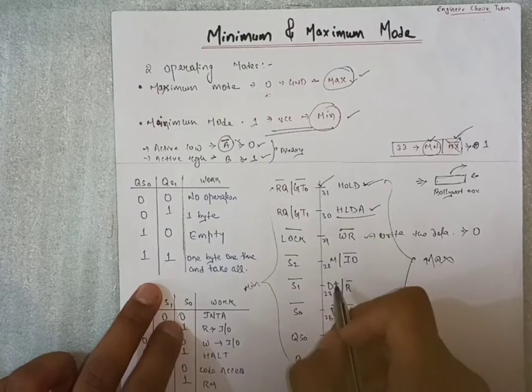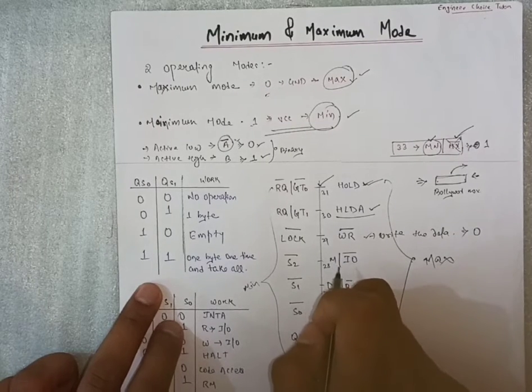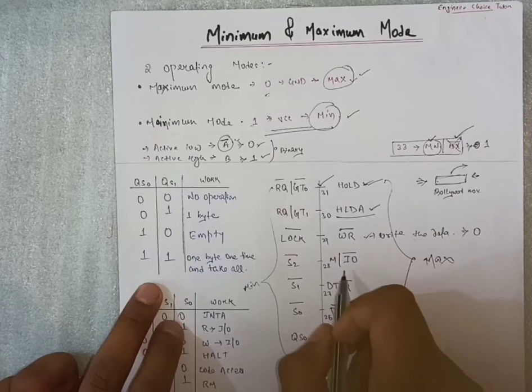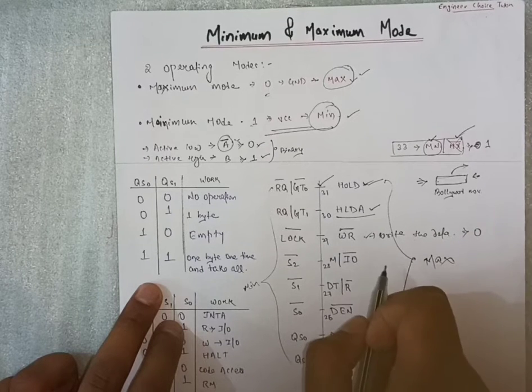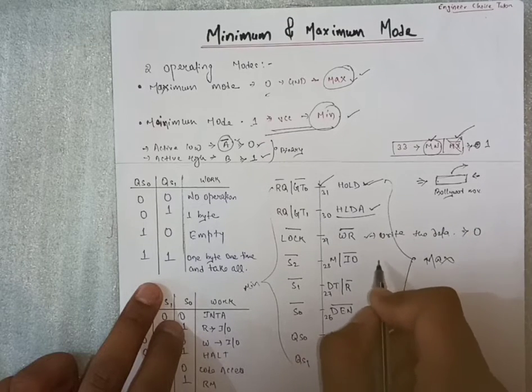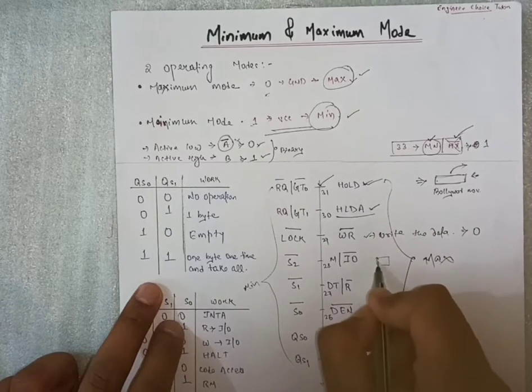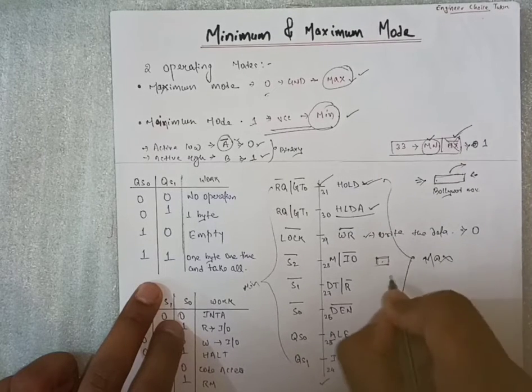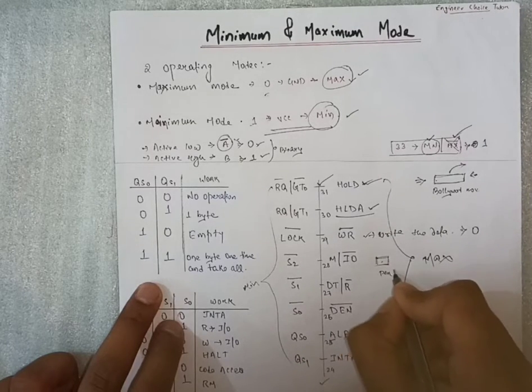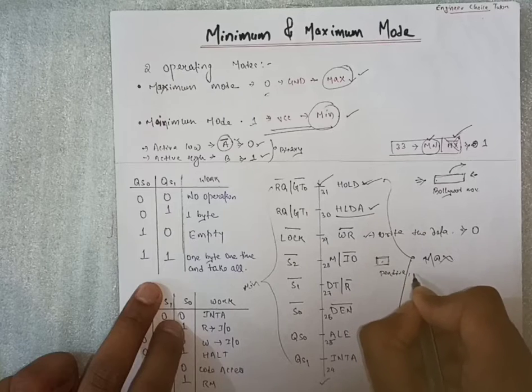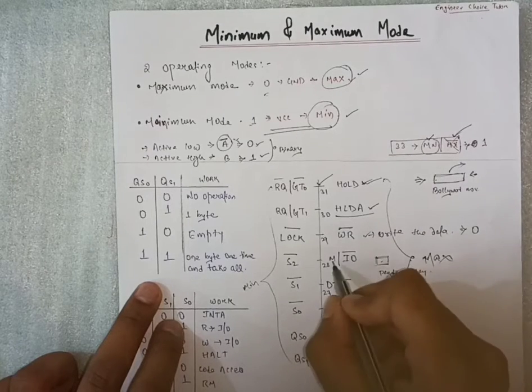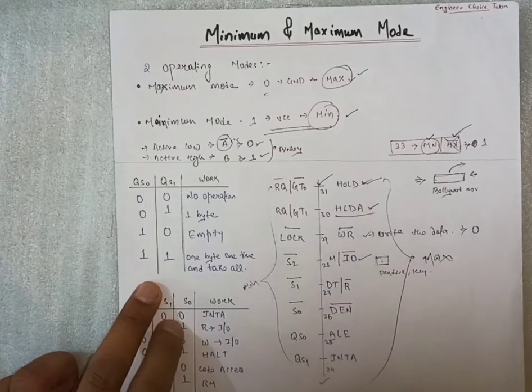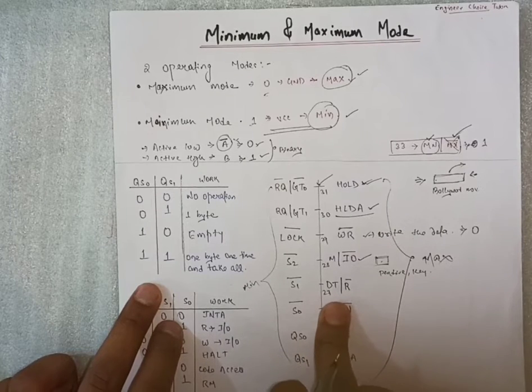After that, 28th number pin is memory input output, M/IO. This will tell from where we are taking the data, either from memory, some memory involving our processor, from memory we are taking or from external peripheral, just like pen drive, the keyboard, from where we are taking.